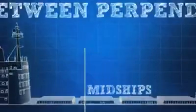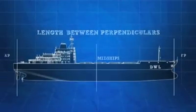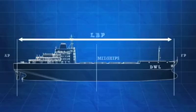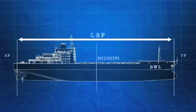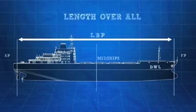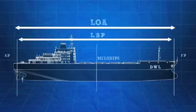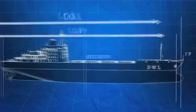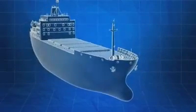Midships is the horizontal point halfway between the forward and aft perpendiculars. The length between perpendiculars, or LBP, is the total horizontal distance between the forward and aft perpendiculars. Length overall, or LOA, is the total length of a ship at its longest point. Note that this may be a little longer than the LBP, because a ship can extend slightly past the perpendiculars.